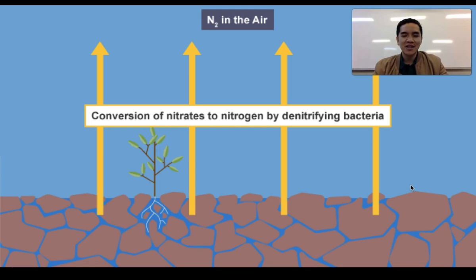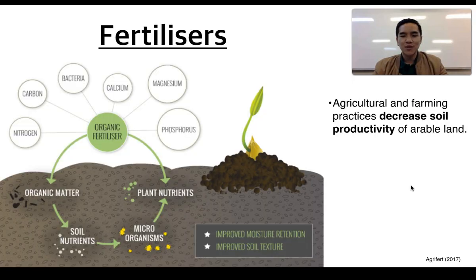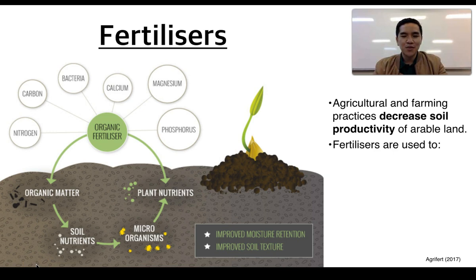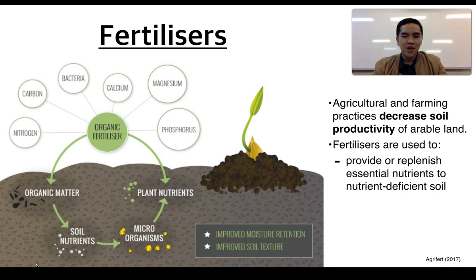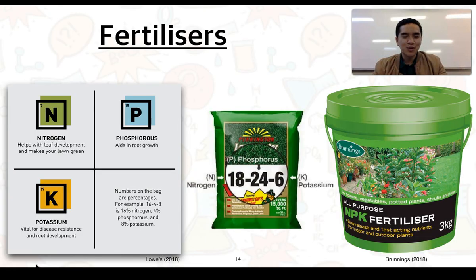These series of processes essentially show us how nitrogen cycles through different systems. We've looked at natural processes allowing for the cycling of nitrogen, but fertilizers are typically used because agricultural and farming practices decrease soil productivity of arable land. Fertilizers are therefore used to provide or replenish essential nutrients to nutrient-deficient soil and to maximize growth conditions of certain crops. Fertilizers provide soils with many important nutrients, but the three most important are nitrogen, phosphorus and potassium.